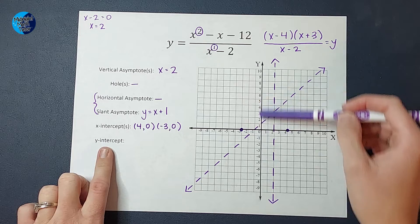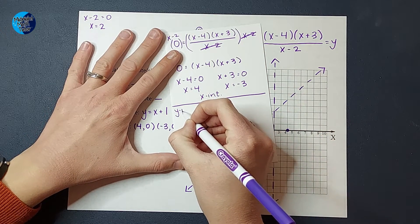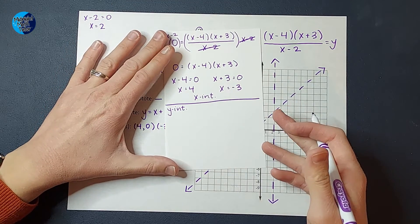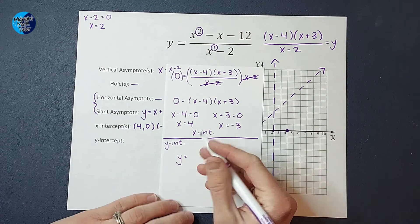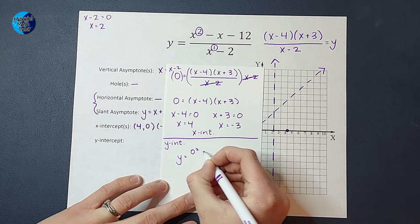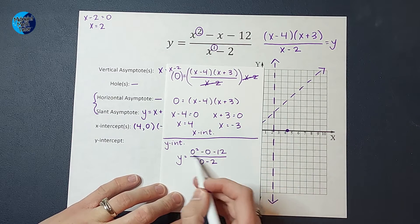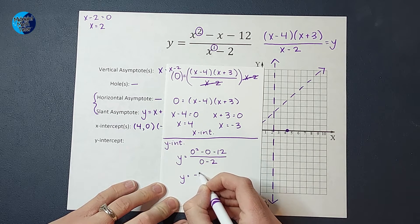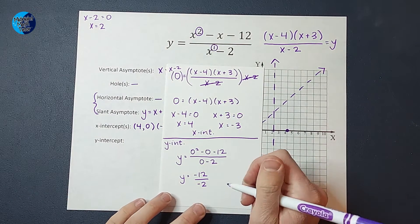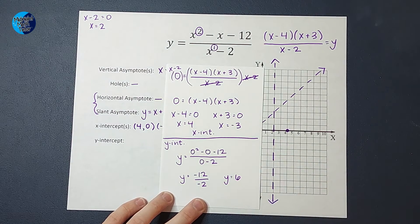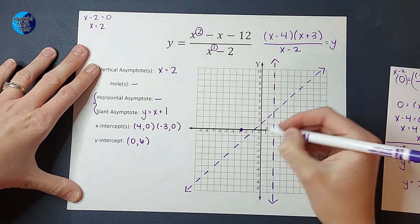Finding the y-intercept is also helpful. To find it, I set x equal to zero and plug into the original function: zero squared minus zero minus 12, over zero minus 2. On top I'm left with negative 12, and on the bottom I have negative 2. Negative 12 divided by negative 2 gives me positive 6. So my y-intercept is at (0, 6), and I plot that on the graph.